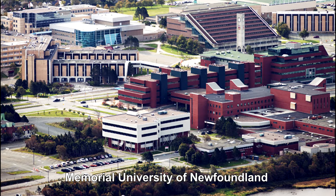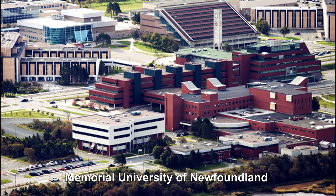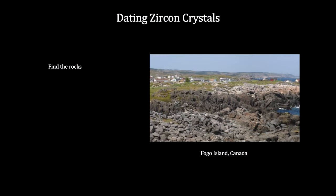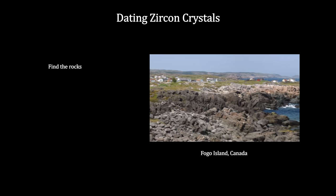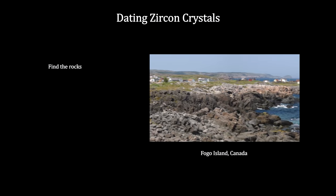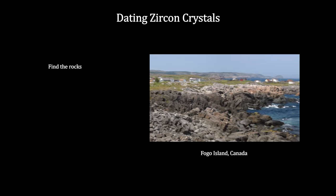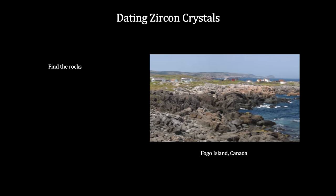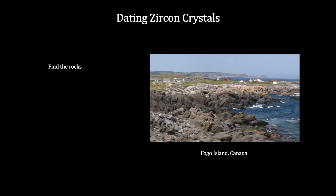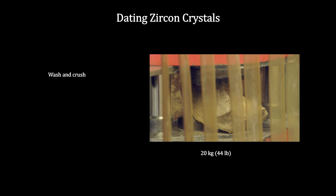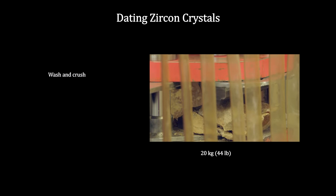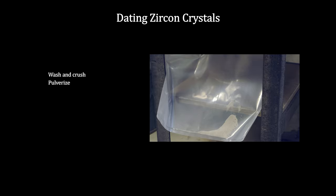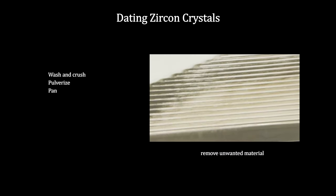Here's how the Memorial University of Newfoundland does it. First, of course, they find old-looking rocks — the geology associated with this step is a science in its own right. 20-kilogram rock samples are typical — that's 44 pounds. Their first step is to wash and crush the rock into chip-sized pieces, then pulverize the chips into powder, and pan the powder to select only the densest particles.